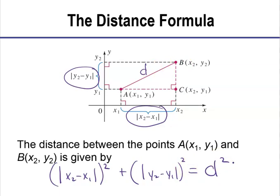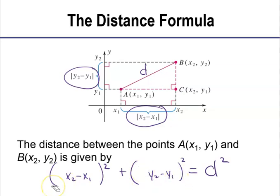A couple of comments about this: when you take an absolute value and square it, it's positive. But what if I just left off the absolute values? Do you still get a positive number? Yes — because when you square a number, it turns positive. So I don't need the absolute values in either of these because I'm squaring it. If you have just numerical values in here, it's going to turn positive.